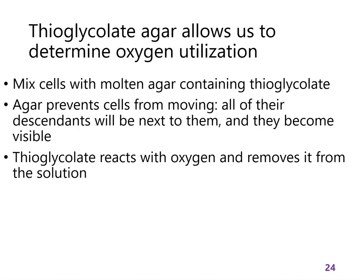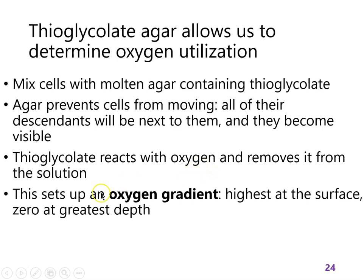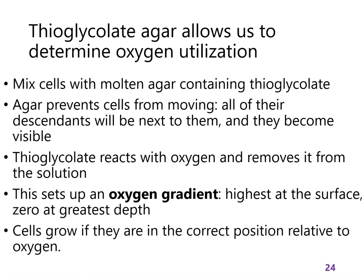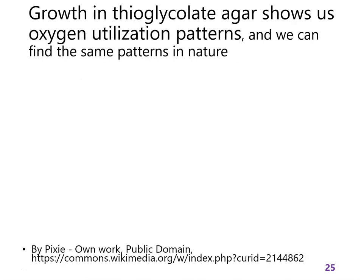How do the oxygen concentrations come about? Thioglycolate is a molecule that reacts with oxygen and removes it from the solution, setting up an oxygen gradient. At the surface, oxygen can diffuse into the agar, so there's oxygen at the surface. At the bottom, there's no oxygen. So cells can grow if they have the right amount of oxygen in their location.